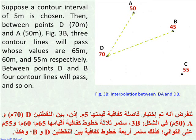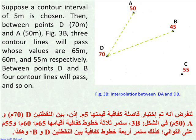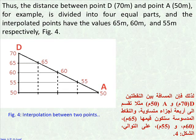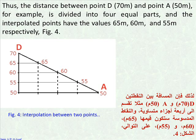Then, between points d whose elevation is 70 meters and a whose elevation is 50 meters in the figure, 3 contour lines will pass whose values are 65 meters, 60 meters, and 55 meters respectively. Then, between points d and b, 4 contour lines will pass, and so on. Thus, the distance between point d whose elevation is 70 meters and point a whose elevation is 50 meters is divided into 4 equal parts, and the interpolated points have the values 65 meters, 60 meters, and 55 meters respectively — see figure 4.